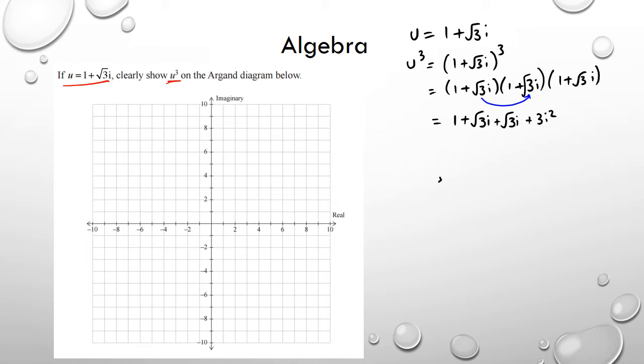So that's my first two brackets and I still have to multiply it by (1 + √3i), which is this bracket here. When I simplify this, I'm going to get 1 + 2√3i. 3i squared can be written as minus 3, and of course I still have my (1 + √3i). So simplifying this, I'm going to get -2 + 2√3i.